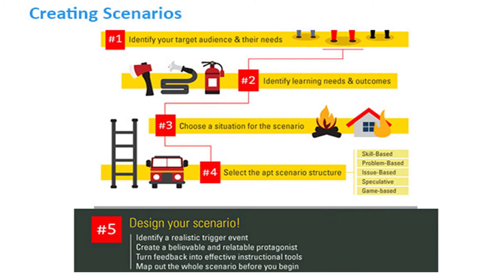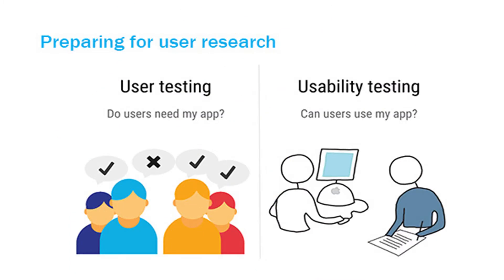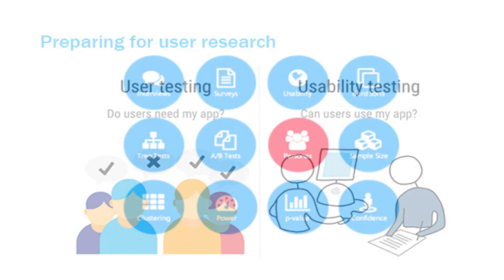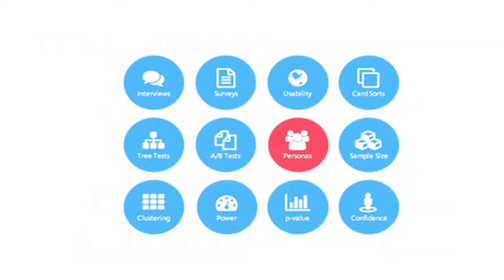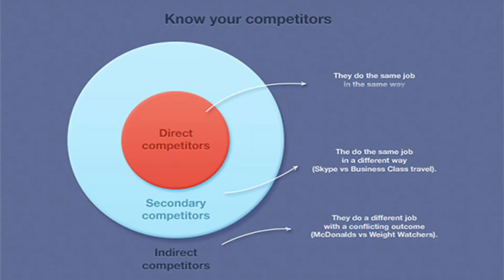After creating the user persona, you will start research work. UX is all about research — user interviews, stories, observations, surveys, and field work. Through this research you identify the target audience's preferences, pain points, and needs.